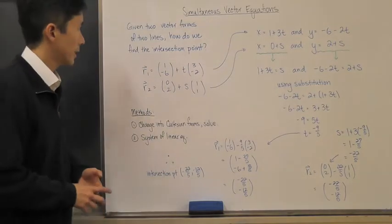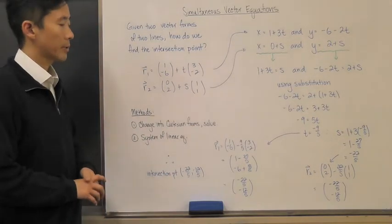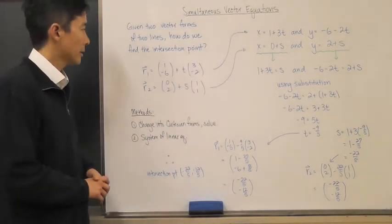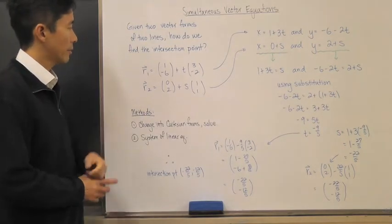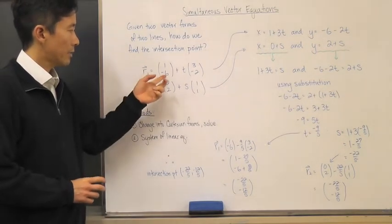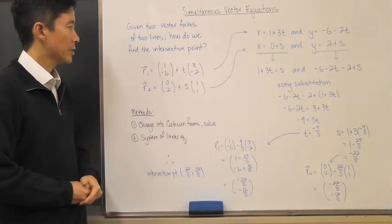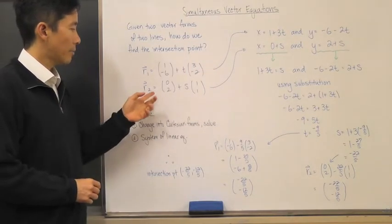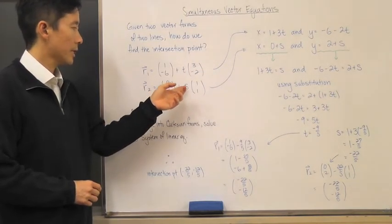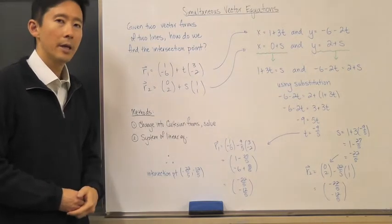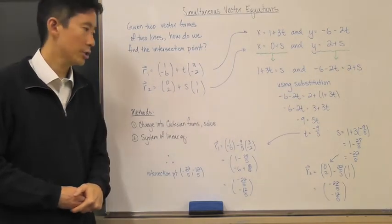Let's take a look at a particular example. We have r₁, our first line, being described by (1, -6) + t(3, -2), and our second line being (0, 2) + s(1, 1). Notice one of the things you should recognize...